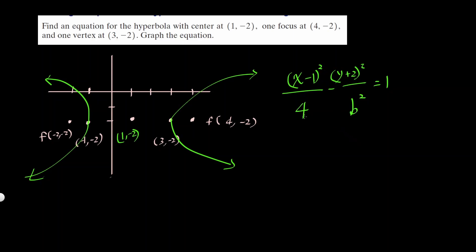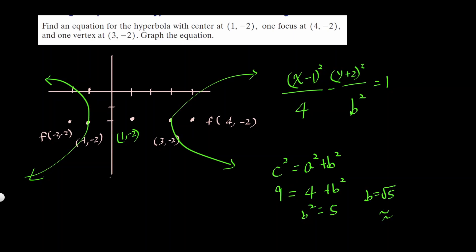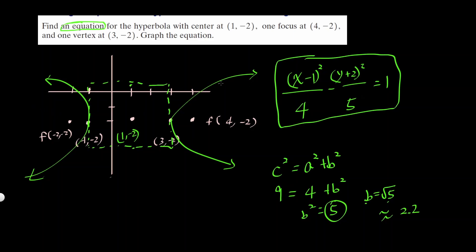We don't know b squared yet, but we can figure it out. c squared equals a squared plus b squared. c is the distance from center to focus, which is 3, so c squared is 9. Then 9 equals 4 plus b squared, so b squared equals 5, meaning b is square root of 5, approximately 2.2. So the equation of the hyperbola is (x minus 1) squared over 4, minus (y plus 2) squared over 5, equals 1.